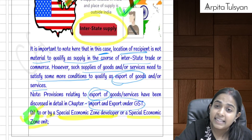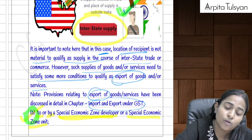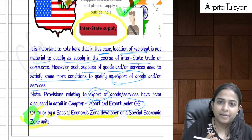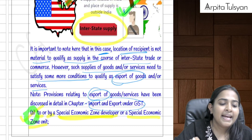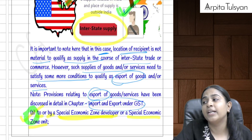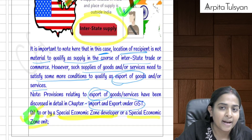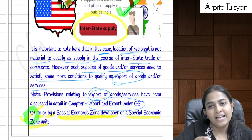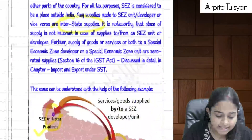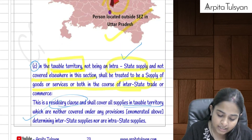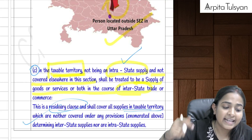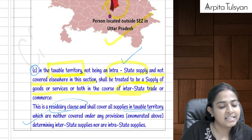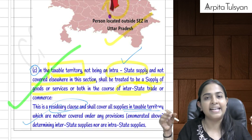Importantly, any supply made to an SEZ (Special Economic Zone), or any supply made by an SEZ — whether goods or services — is always deemed to be interstate supply, even if both the supplier and SEZ are located in the same state. This is because SEZs are treated as being outside India. Additionally, any supply in the taxable territory not covered under intrastate supply is treated as interstate supply as a residual provision.